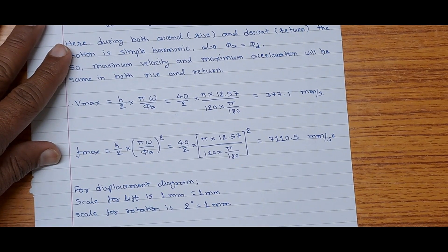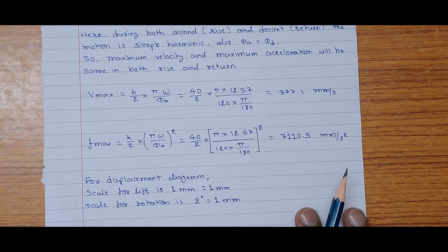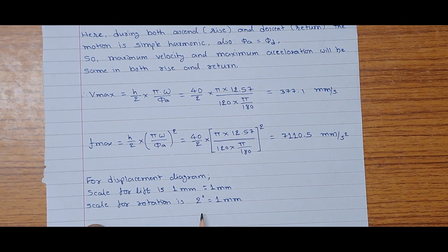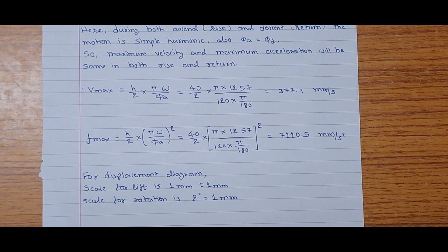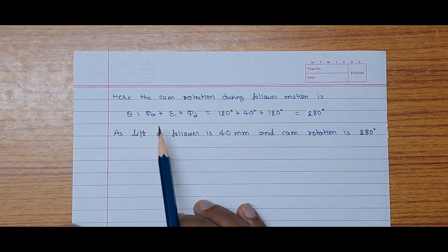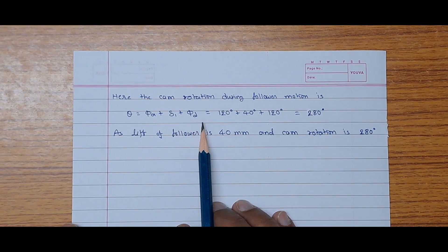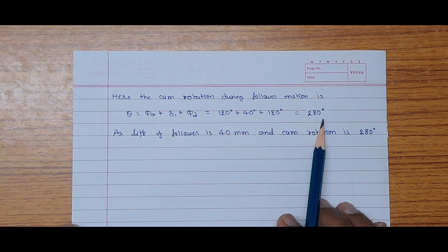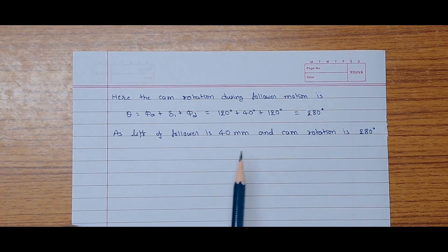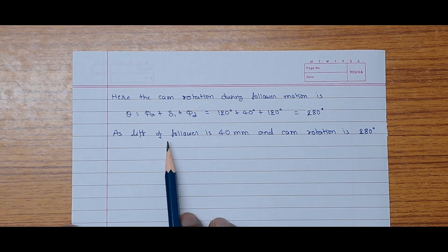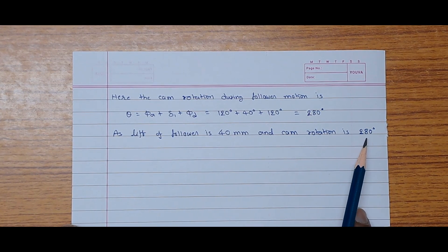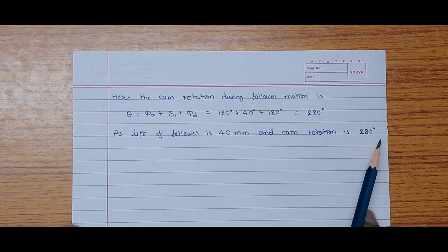For drawing the displacement diagram, we set the scales: lift scale is 1:1, and rotation scale is 2 degrees = 1 mm. The total cam rotation during follower motion is: angle of ascent + dwell + angle of descent = 120 + 40 + 120 = 280 degrees. With lift = 40 mm and rotation = 280 degrees, at the rotation scale that gives 140 mm. So we draw a rectangle of size 40 mm × 140 mm.